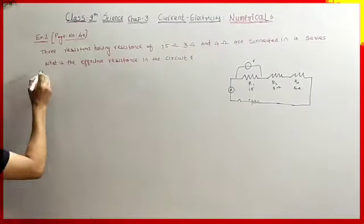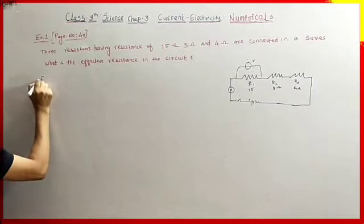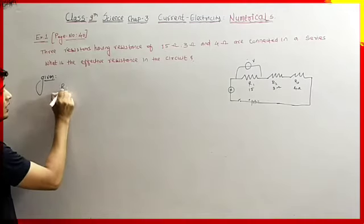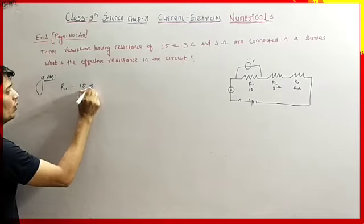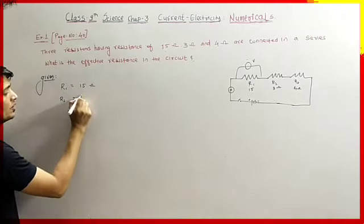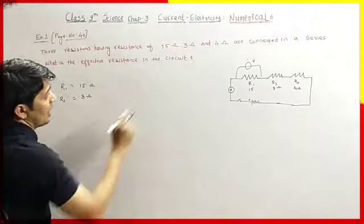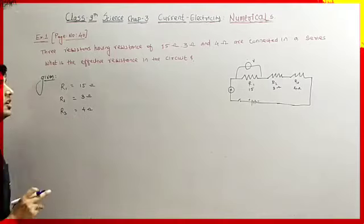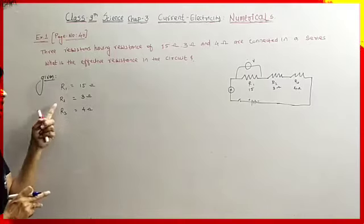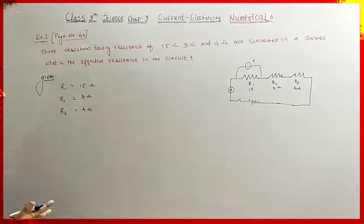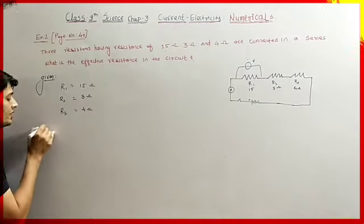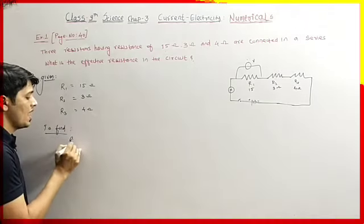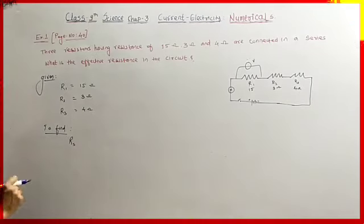First we write the given values: R1 = 15 ohm, R2 = 3 ohm, and R3 = 4 ohm — these are the resistances of the three respective resistors. We have to find RS, the effective resistance in the circuit.